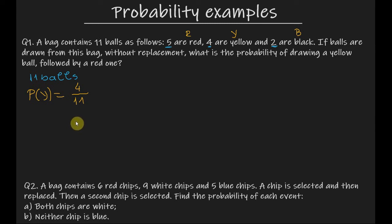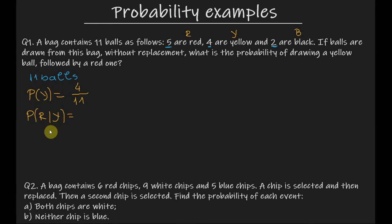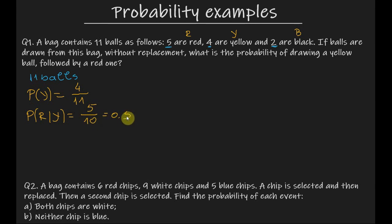Next, we are drawing a red ball, and here we have a conditional probability, written as P of R given Y. This means the probability that R occurs given that Y has already occurred. In our case, we are drawing a red ball knowing that the yellow ball has already been drawn. After the yellow ball has been drawn and not replaced, there are 10 balls left in the bag, 5 of which are red. So that is 5 over 10, which equals 0.5.